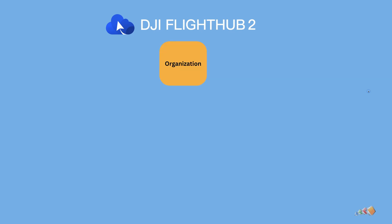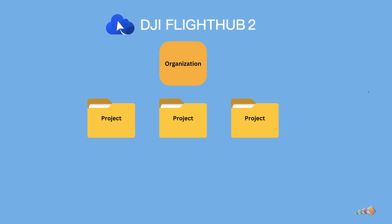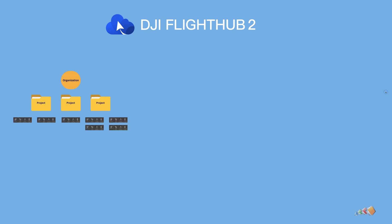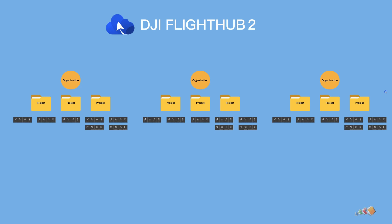FlightHub 2 is quite easy to use once you understand the hierarchy, which is that you have to have an organization, and then within the organization you have projects, and then within projects you have flight routes. You can actually have multiple organizations, each with their own set of projects and their own set of flight routes.